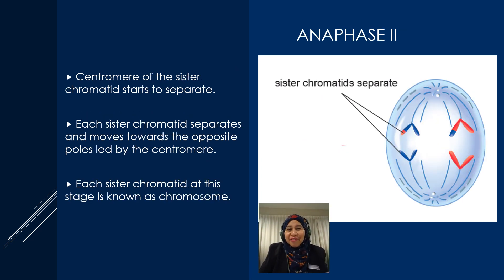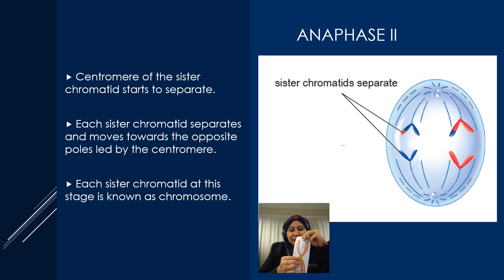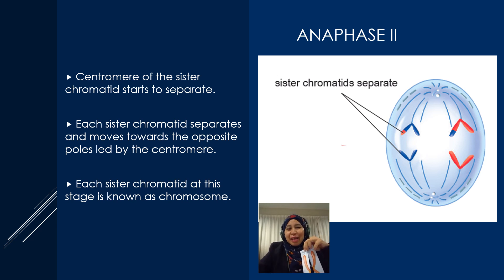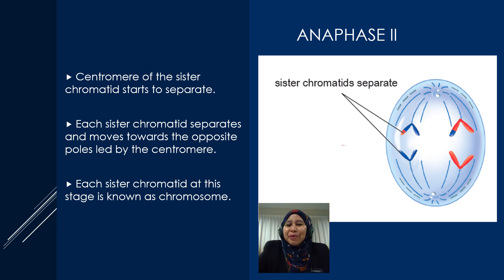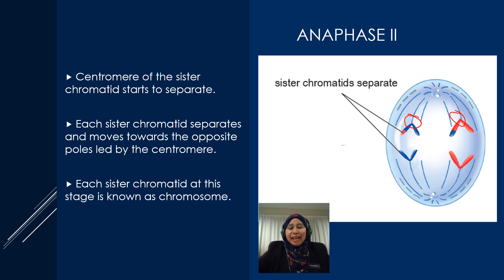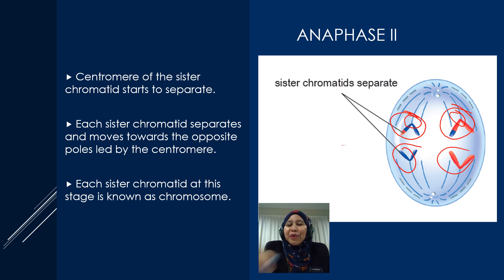In anaphase 2, the centromeres of the sister chromatids start to separate. Each sister chromatid separates and moves towards the opposite pole, led by the centromere, which is being pulled by the spindle fiber. Each sister chromatid at this stage is now referred to as a chromosome.